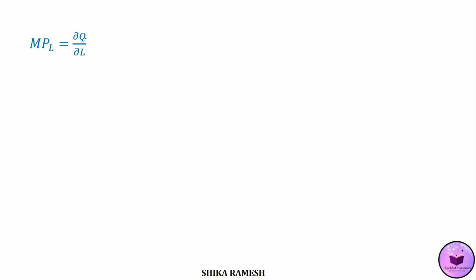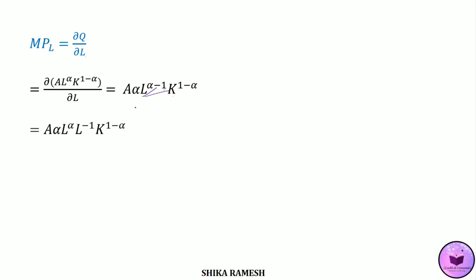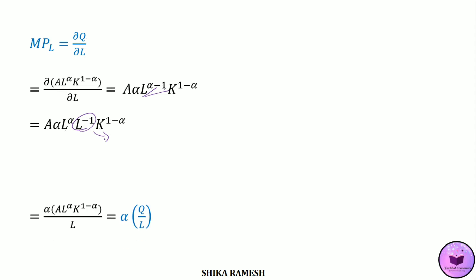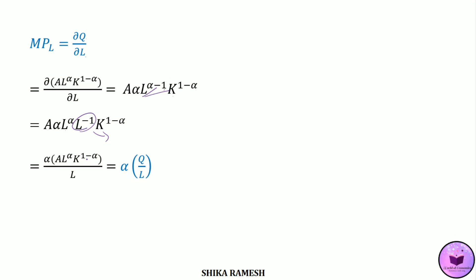The marginal product of labor and capital can also be found in a simpler way. Differentiating the Cobb-Douglas production function with respect to labor gives A·α·L^(α−1) K^(1−α). Splitting L^(α−1) gives A·α·L^α · L^(−1) · K^(1−α). Bringing L^(−1) to the denominator gives α·AL^α K^(1−α)/L. Since AL^α K^(1−α) equals Q, this simplifies to α·(Q/L).